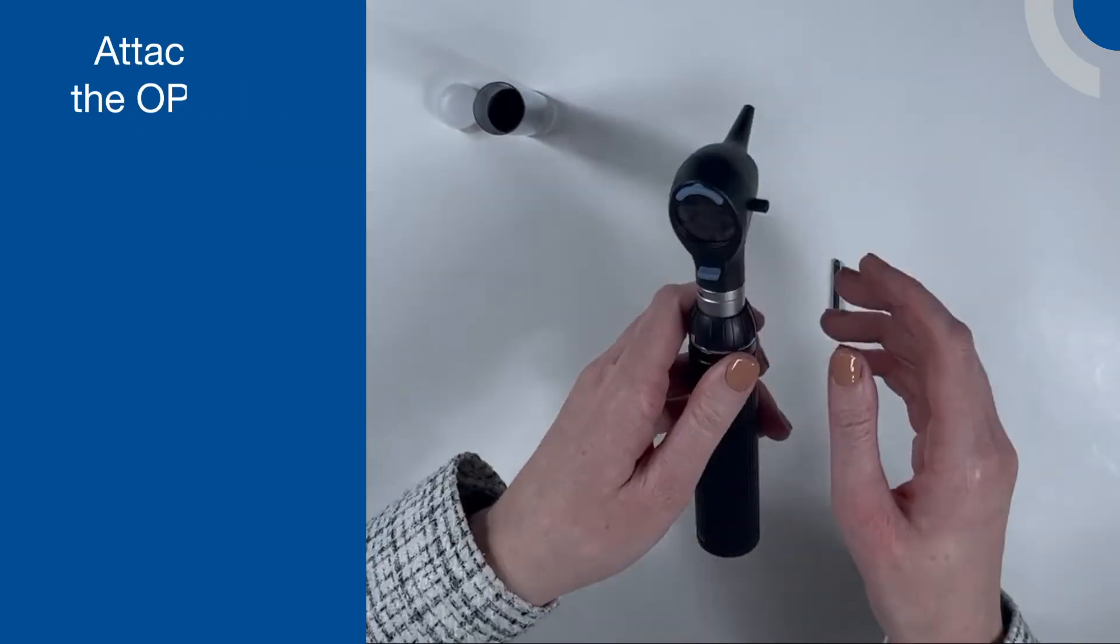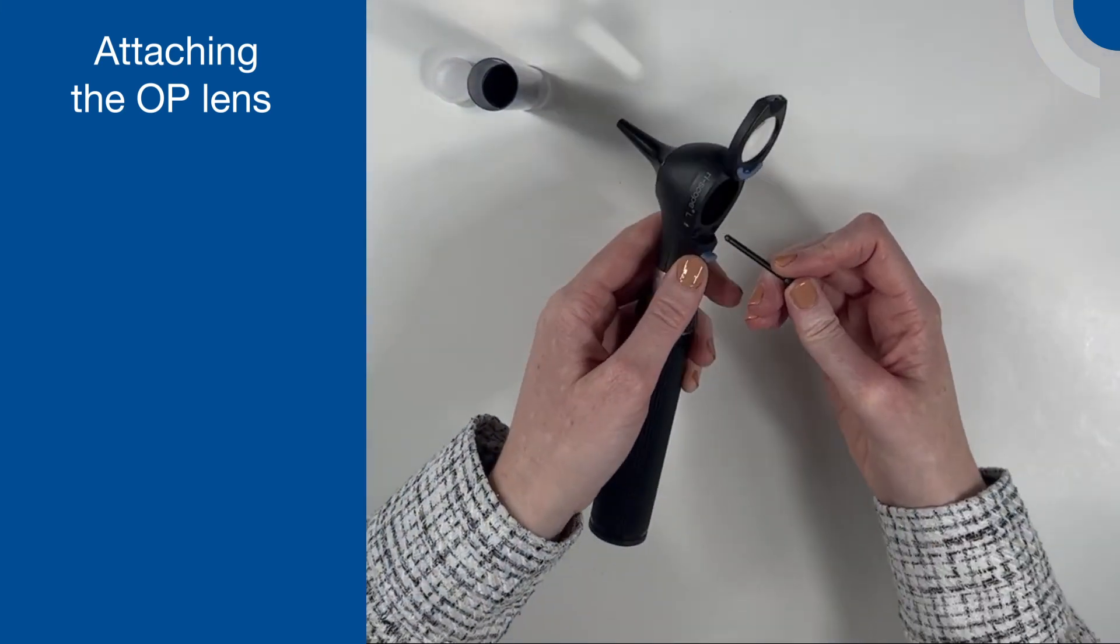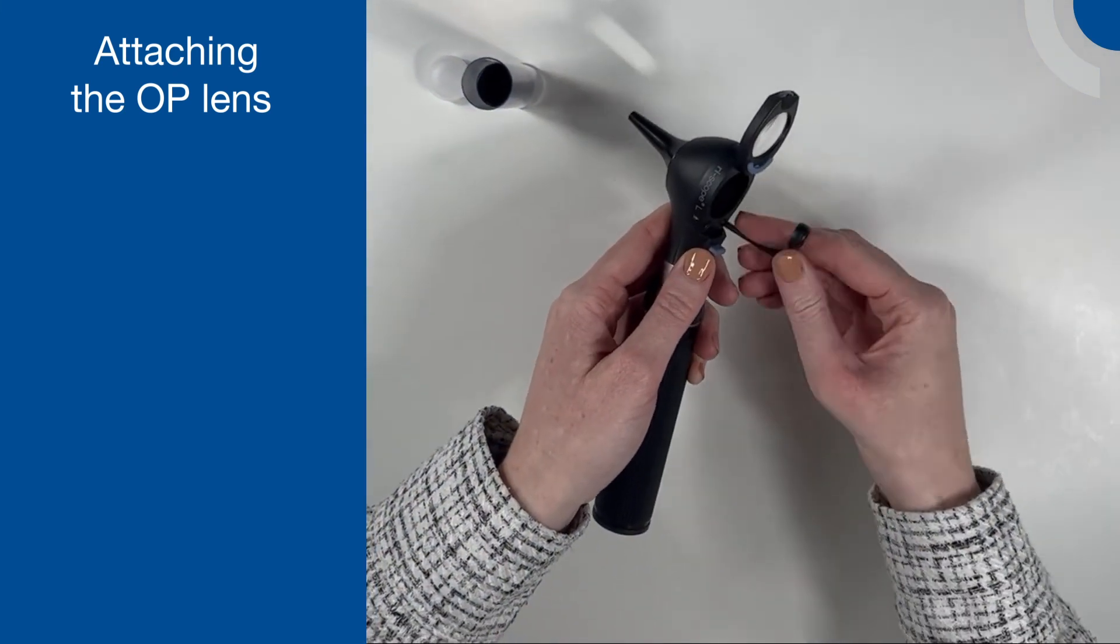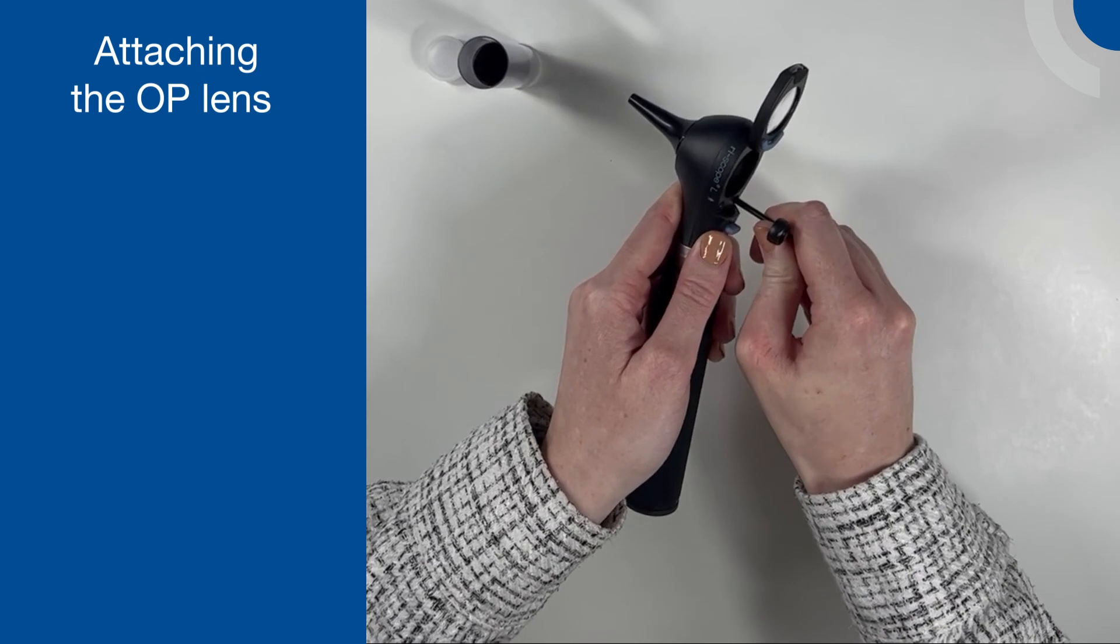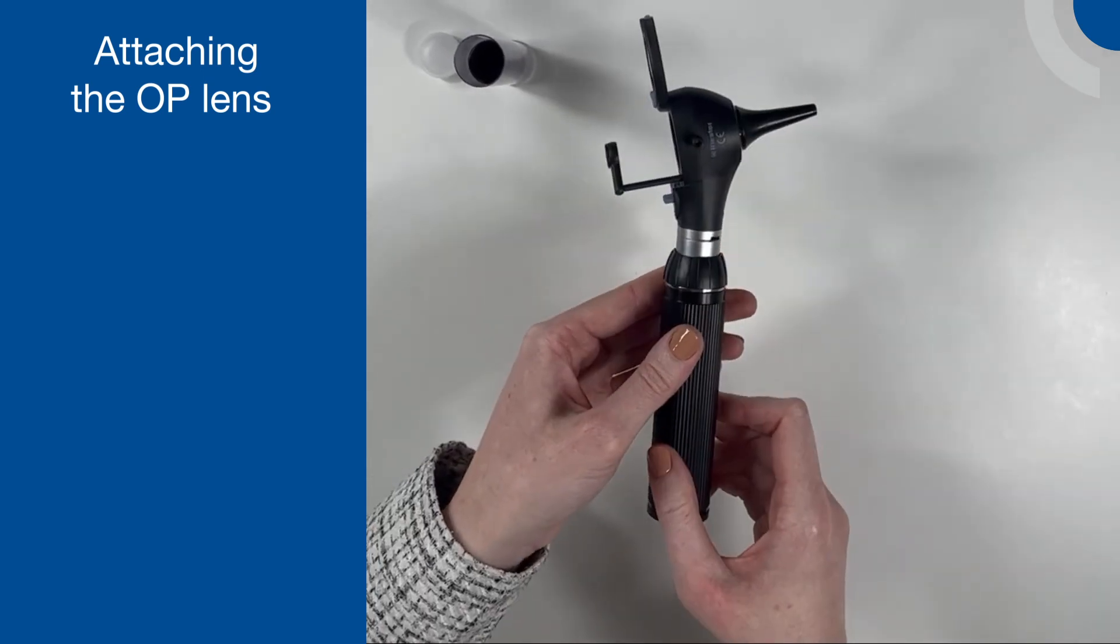To use the four times magnifying operation lens, slide the swivel lens to the side and upwards and insert the lens into the hole on the left or the right as per your preference. The lens is now ready to use.